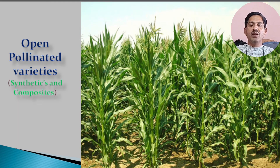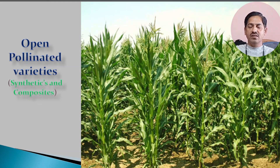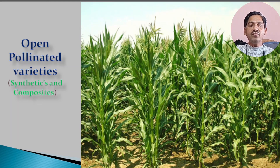Seed production is of two types. The first is production of open pollinated varieties, and the second is hybrid seed production. We will discuss both types of seed production step by step. Let's start with the first type — open pollinated varieties, synthetics and composites.